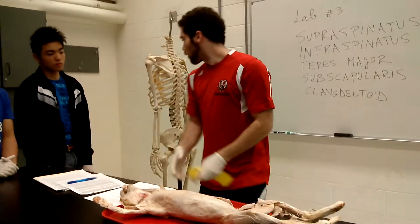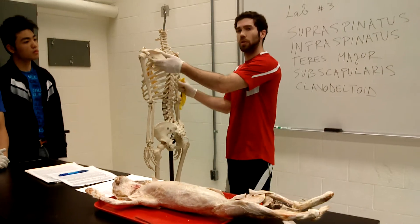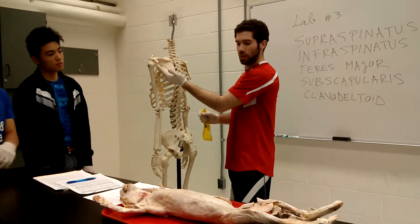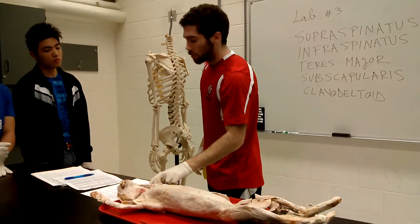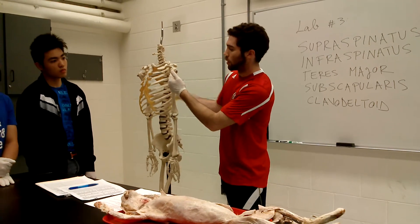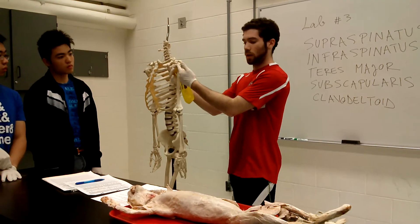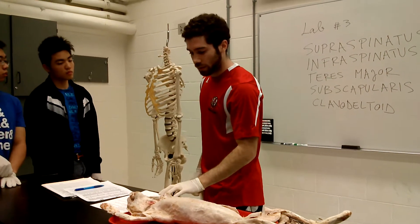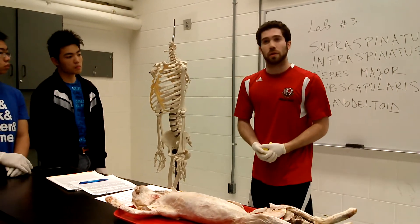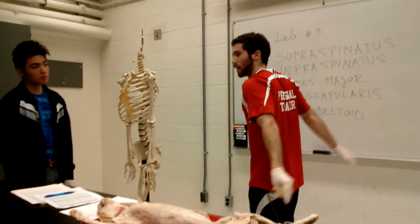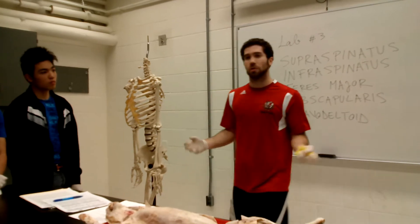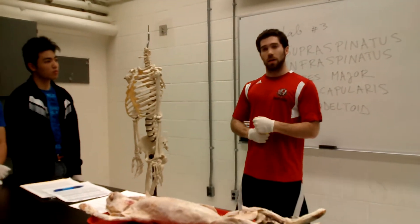Teres major originates on the lateral border of the scapula and the inferior angle, and inserts into the bicipital groove of the humerus — right where the bicep tendon passes through. This muscle assists with internal rotation and shoulder extension, bringing the shoulders back like a lat pulldown. It is the opposite of infraspinatus in terms of rotation.